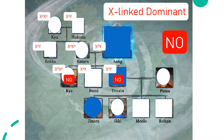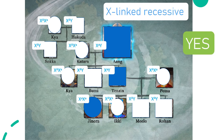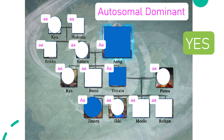Beginning with X-linked dominant: we can see right away that this does not work as a mode of inheritance because Tenzin, Aang's son, does not have a dominant allele on his X chromosome. X-linked recessive does work — all family members with the phenotype, the blue forehead arrow, have recessive alleles on their X chromosomes.